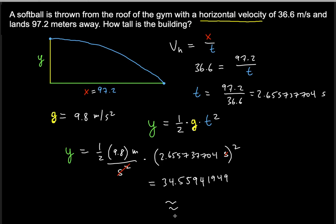Now you want to round it to the number with the least number of significant figures. Notice that significant figures here are both 3 in these two. So we're going to round it to the nearest tenth because we need 3 significant figures. So that's going to be 34.6, about 34.6 meters.